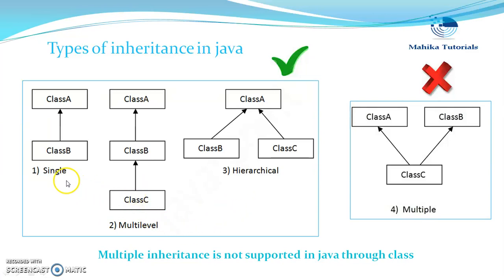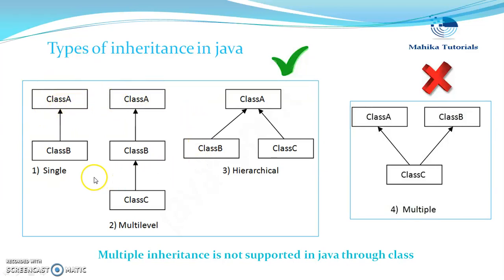In the next tutorial we will start with the example of single inheritance. One important thing related to inheritance is that a subclass acquires all the properties and methods of the super class except the private ones. Private data members or private methods are never inherited, so they will not be accessible in the subclass. Thank you for watching this tutorial. Please subscribe to the channel if you have not yet subscribed.